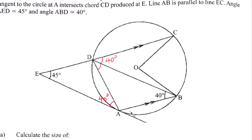This angle in the alternate segment with that angle should also be equal. In triangle EDA, we have two angles: 45 degrees and 40 degrees. The sum of angles in a triangle adds up to 180, so 45 plus 40 equals 85, and 180 minus 85 gives 95 degrees for the remaining angle.